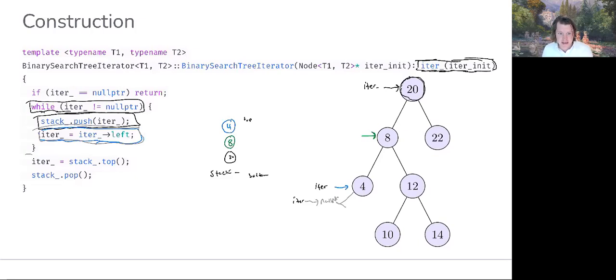The top value in the stack is the address of the node with the value four. So iter is going to be assigned to that. And then we're going to remove that element from the stack. So four will be popped from the stack.